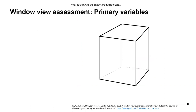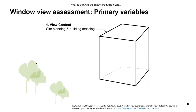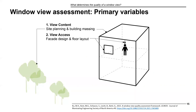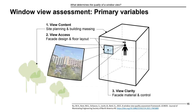Based on the literature review, we identified three primary variables of window view quality. The first variable is view content: what visual features the occupant sees from the window — closely related to early design stages such as site selection, planning, and building massing. The second is view access: how much of a window view the occupant has in the building — related to facade design and floor layout. The third is view clarity: how clearly the occupant can see through the window — related to facade material and control. All three factors affect view quality.